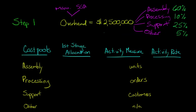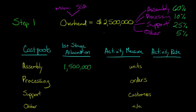So assembly gets 60% of $2.5 million, which is $1,500,000. Now, you might be wondering about the activity measure column. We've got the activity — assembling units — and the cost amount going into that pool. But we're ultimately shooting for a rate. To get a rate, we need some kind of measure. The assembly costs, in our opinion, are driven by the number of units we actually assemble — if we assemble more bicycles and skateboards, we'll have more assembly overhead costs.